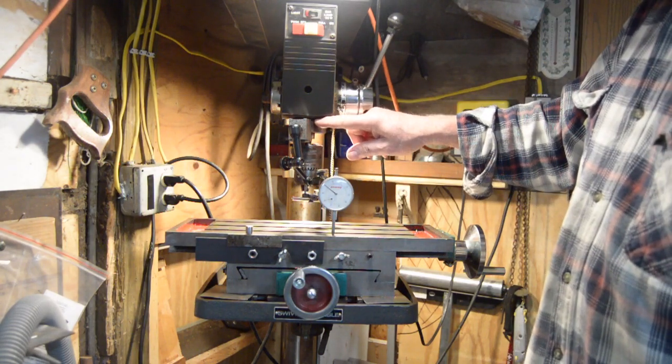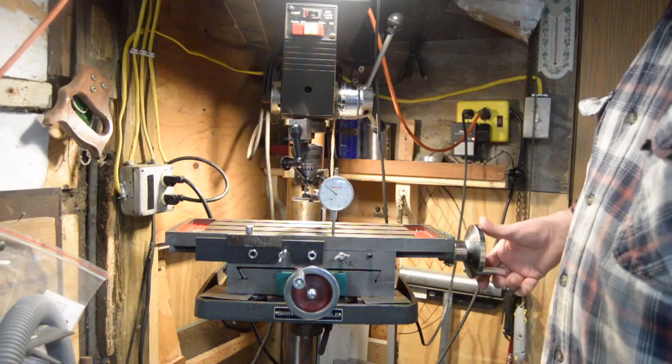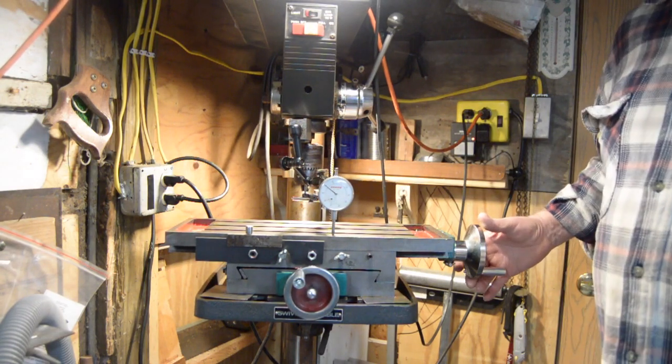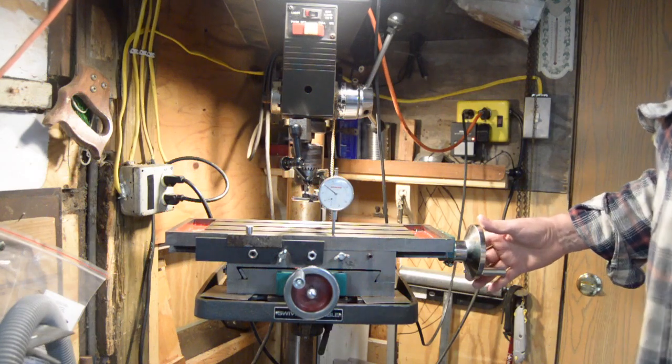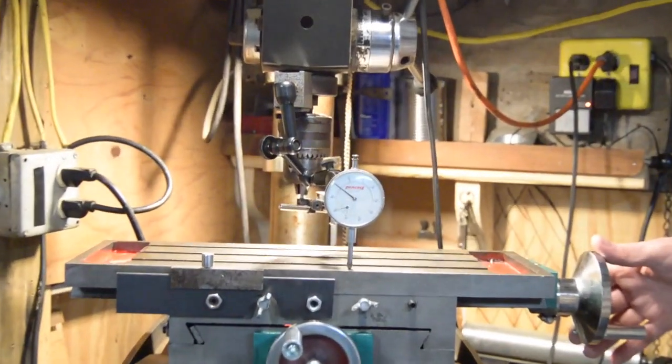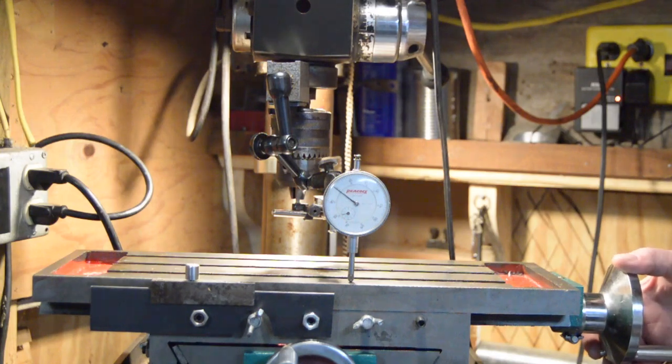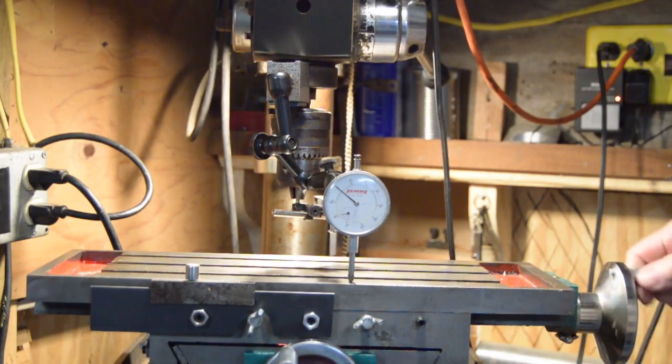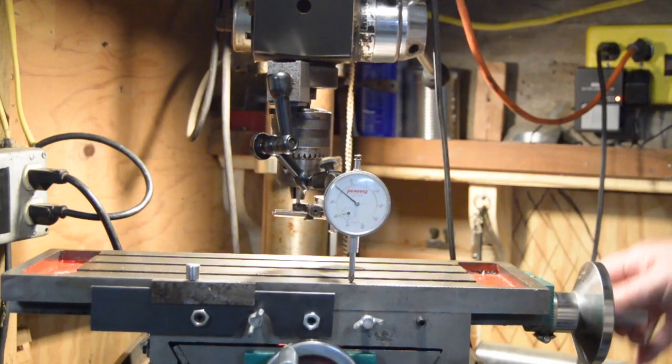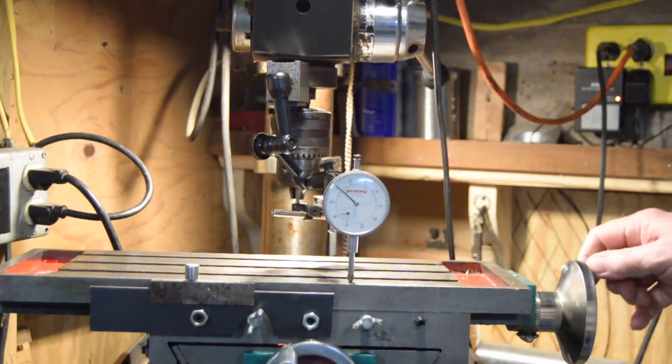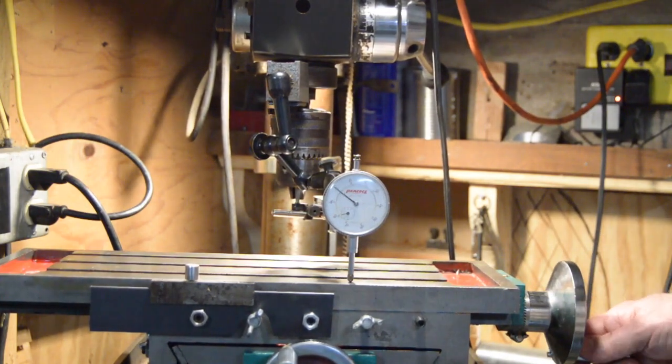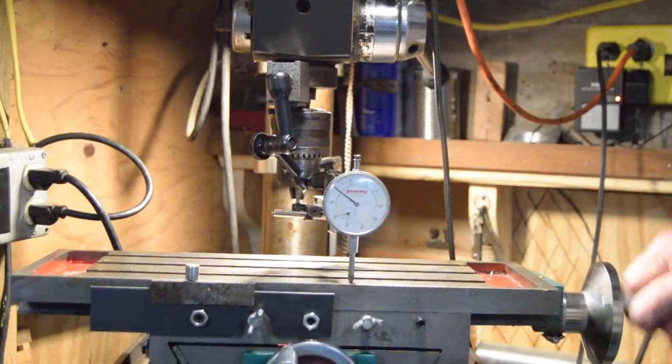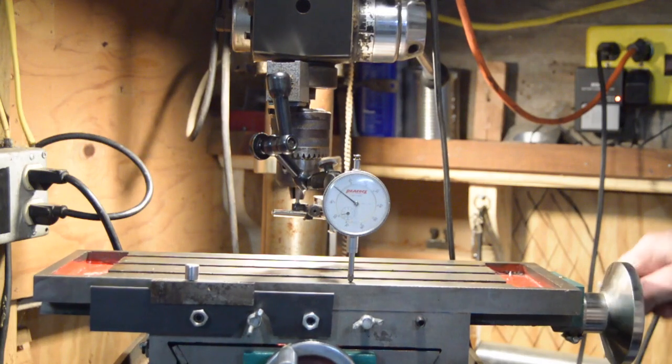If I put this indicator on a stationary spot and I tram this, now that needle's moving a little bit because I'm cranking it. But if you watch, it's actually staying on zero. It's just bouncing as I go because there's play in the gibs and different things. But basically, it's staying at zero as I'm cranking.